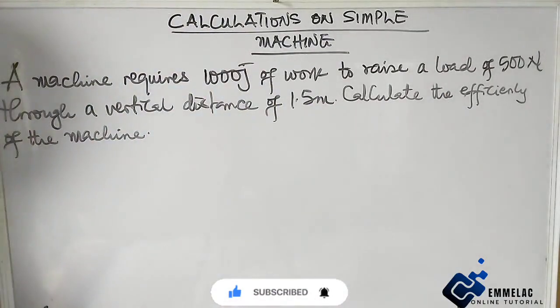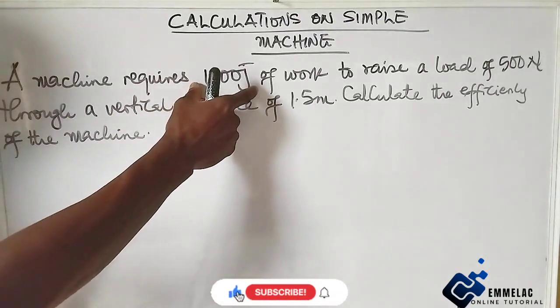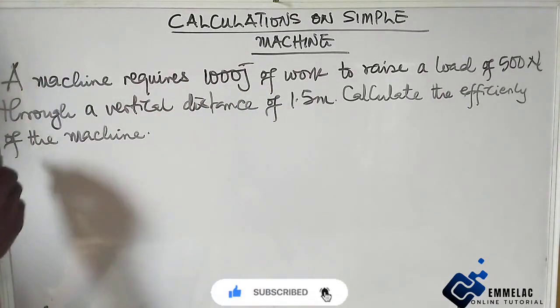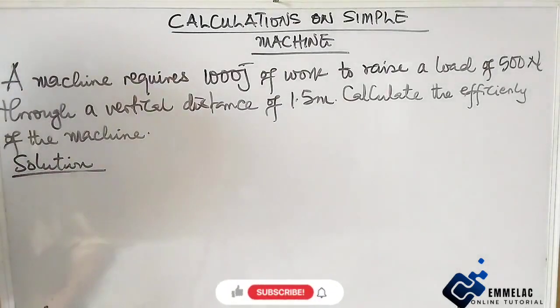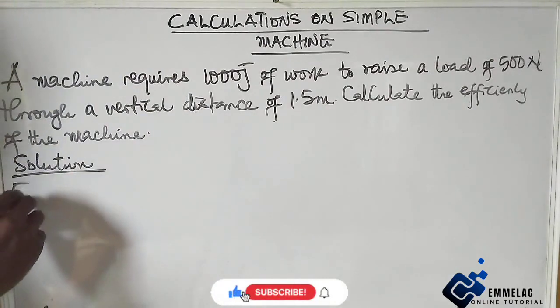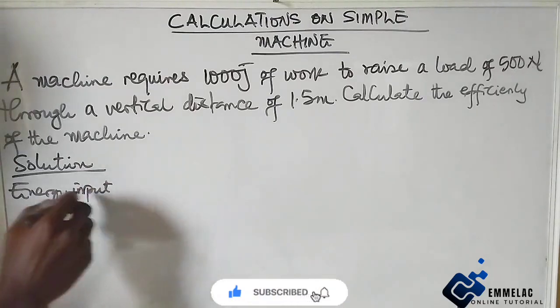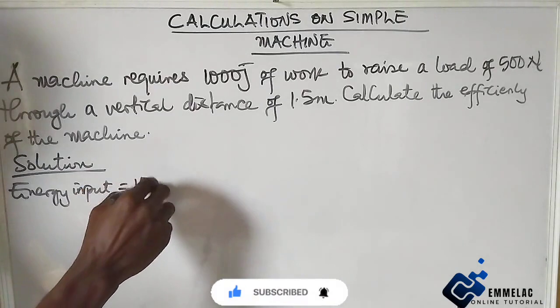Now we can see that the machine requires, which means this is the energy input. To solve this you must ensure you're able to interpret the question. The energy input into the machine is 1000 joules.